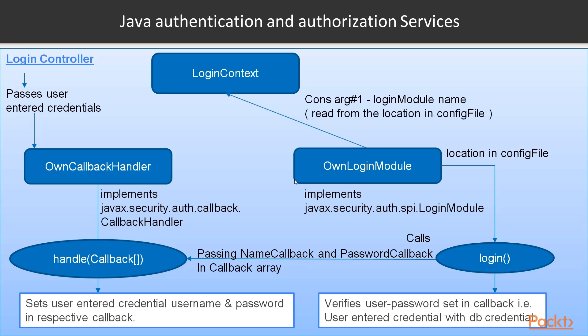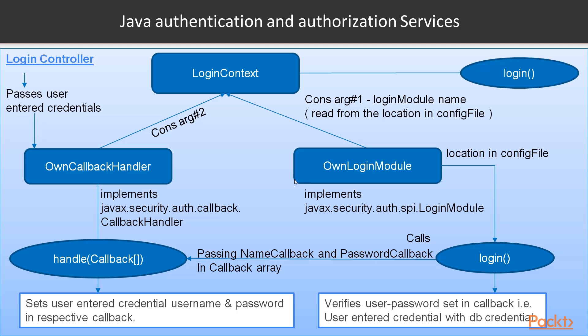The first constructor argument to LoginContext is the login module name, which is read from the configuration file containing the class path of your login module. The second argument is the callback handler object. Once the LoginContext object is created, you call its login method, which triggers the entire authentication process. You just need to make sure the username and password are passed from the login controller to the callback handler.